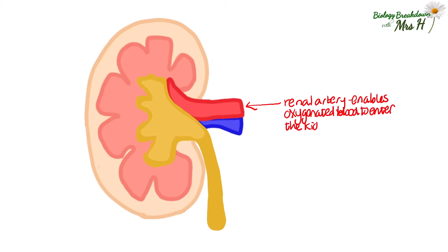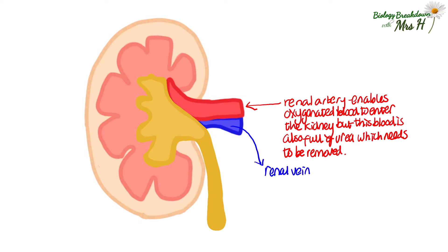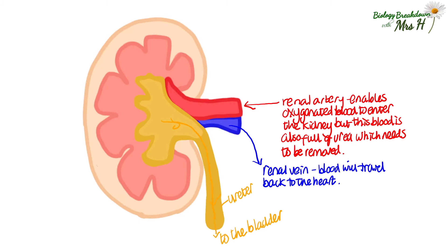This is a cross-section of the kidney with the renal artery taking oxygenated blood into the kidney — but this blood, even though it's full of oxygen, is full of urea that needs to be removed. This is the renal vein, which enables blood to be taken away from the kidney and back to the heart. Somewhere in the kidney the urea gets removed and emptied into the ureter leading down to the bladder. The little structures inside the kidneys are called nephrons, and there are about a million of these in each kidney.